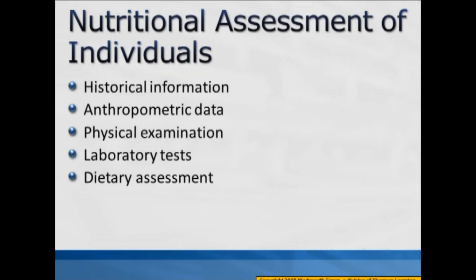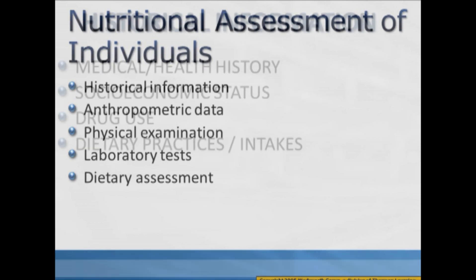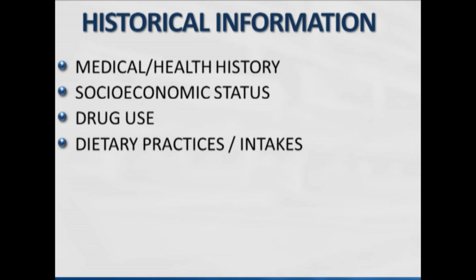In order to complete a nutritional assessment for an individual you have to consider five points: first, the historical information that's given to you; the anthropometric data collected from body composition measurements; the physical examination, notably looking for physical evidence of malnutrition or extreme emaciation; then the laboratory tests that confirm using blood markers what the condition is; and finally the dietary assessment that confirms that nutritionally there's a problem with the way the person is eating.